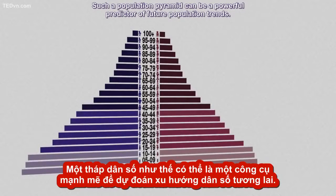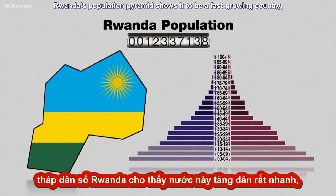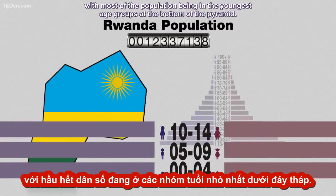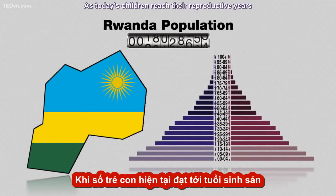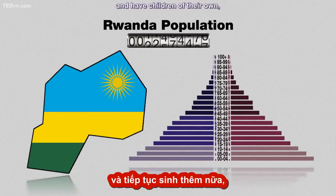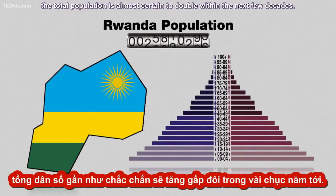Such a population pyramid can be a powerful predictor of future population trends. For example, Rwanda's population pyramid shows it to be a fast-growing country. With most of the population being in the youngest age groups at the bottom of the pyramid, the numbers will grow rapidly in the coming years as today's children reach their reproductive years and have children of their own, making the total population almost certain to double within the next few decades.